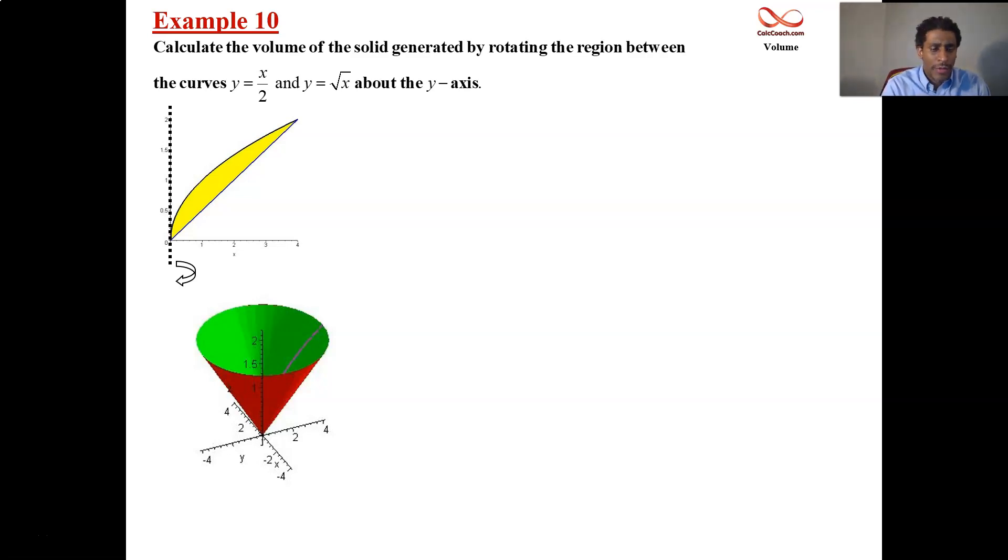And since we are slicing perpendicular to the axis of rotation, then our slices are going to be horizontal. So this is going to be done in terms of y. Well, we have y equals x over 2, so that means that x is equal to 2y.